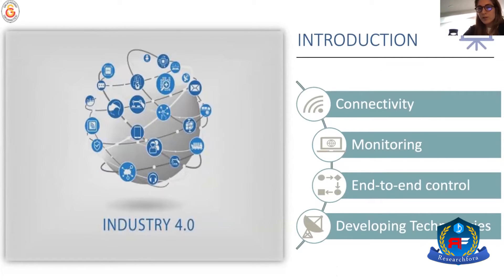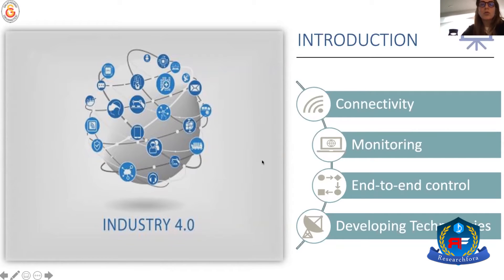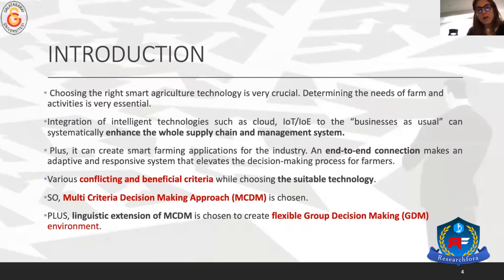My main focus area in my PhD thesis is the digital transformation we're facing these days. It has started with Industry 4.0, the fourth industrial revolution. Today we're seeing this digital transformation in every sector. Agriculture is one of them. With elaborate digital technologies, we now have the ability to control whole systems — connectivity, monitoring, data collection, and end-to-end control of the environment.